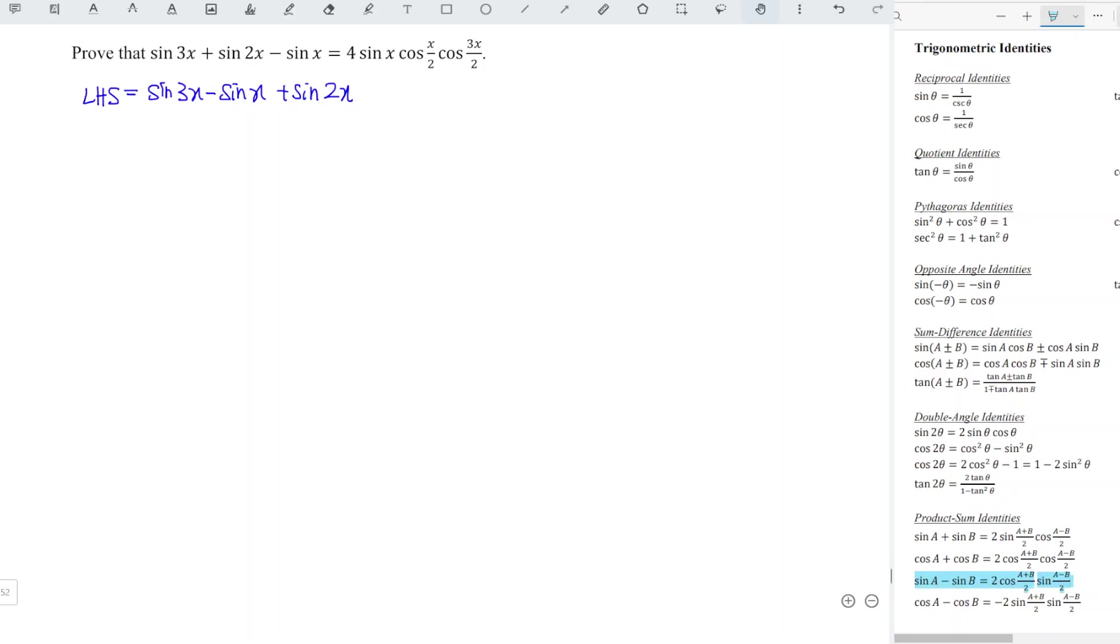Since we have sine minus sine, we should have 2 cos of a plus b over 2 and sine of a minus b over 2. I will first let A be equal to 3x and B be equal to x, which means that a plus b divided by 2 we have 2x and a minus b divided by 2 we have x.